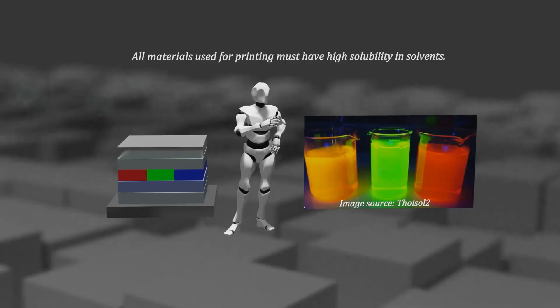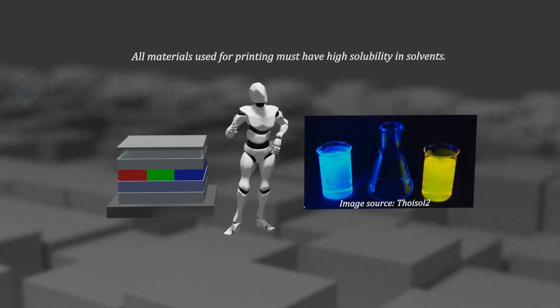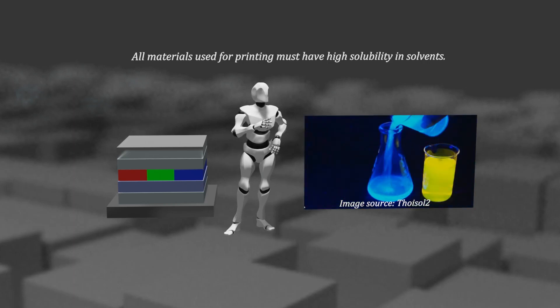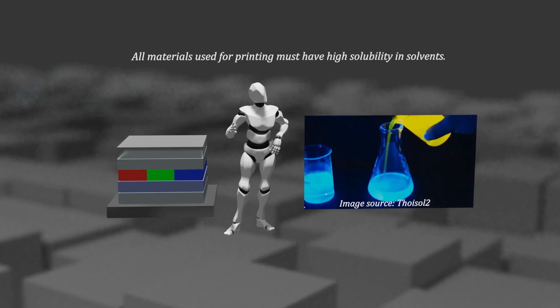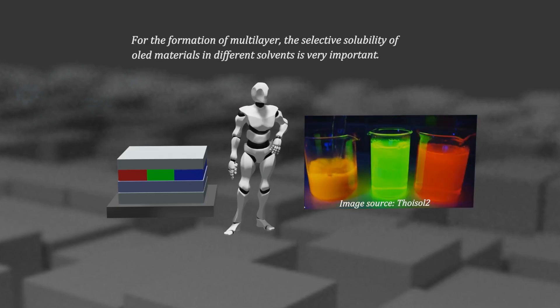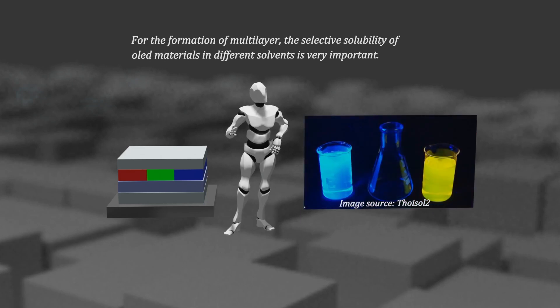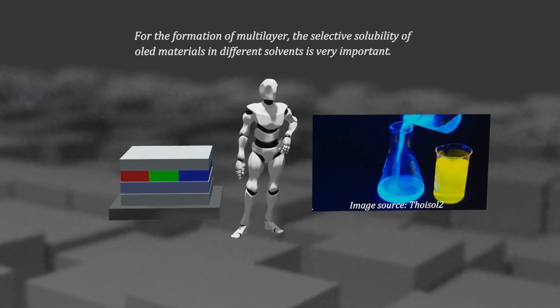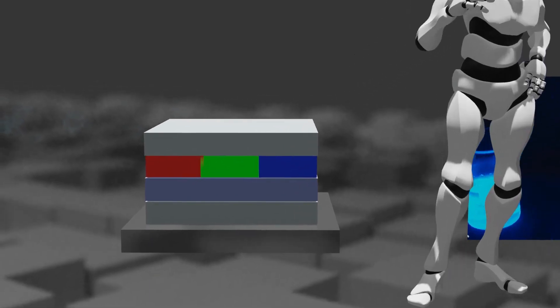In order to apply the printing method, the material used must be dissolved in water or organic solvent, so the molecular structure must be modified to secure solubility. In addition, in order to create a multi-layer structure, the layer of the material formed first should not be dissolved again when the material formed next is sprayed by an inkjet printer head as a solution.